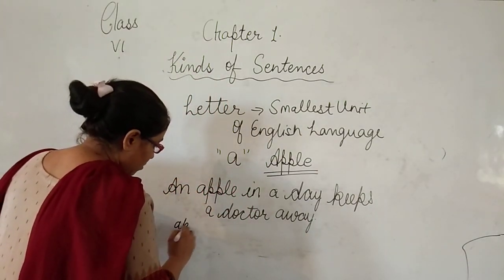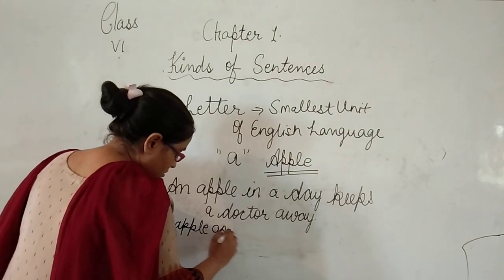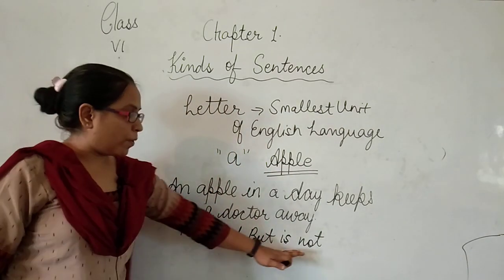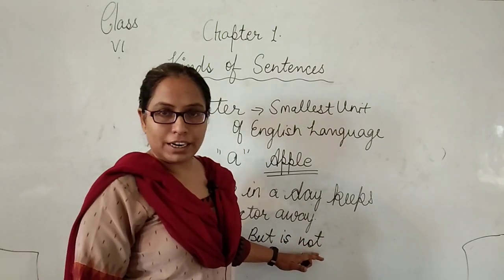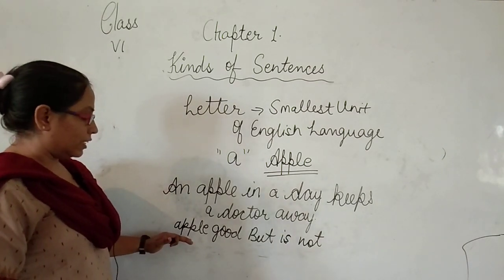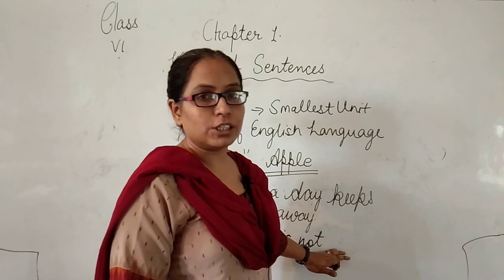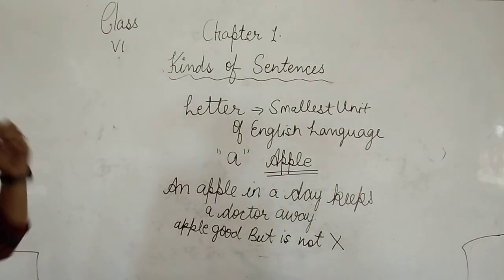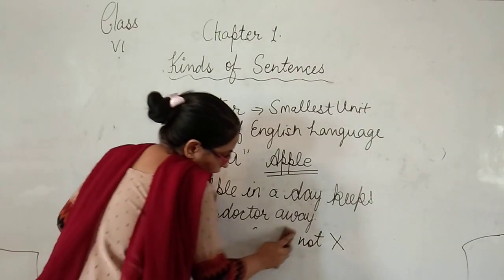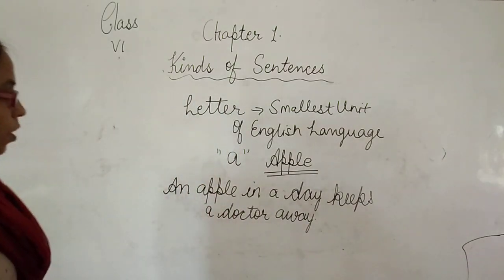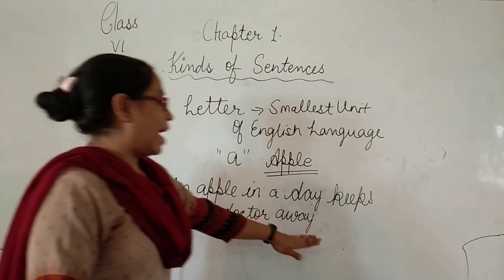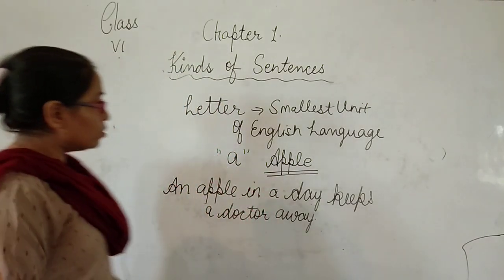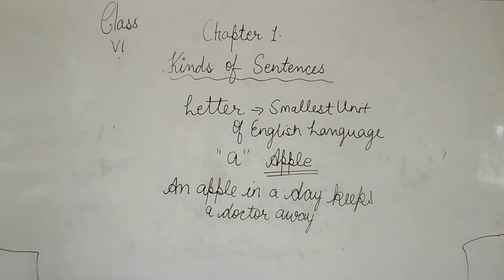If I write words like 'apple, good, but, is, not' — this is also a group of words, but you cannot find any meaningful thought or statement here. Also, it does not begin with a capital letter or end with a punctuation mark. So this group of words is not a sentence. To identify a sentence: it must make a complete thought or statement, begin with a capital letter, and end with a punctuation mark such as a full stop, also called a period in English.